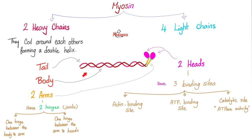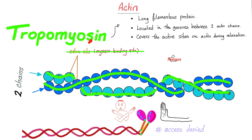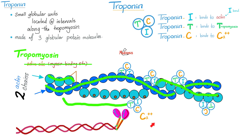Let's review myosin: two heavy chains, four light chains. The two heads have a binding site for actin, an ATP binding site, and catalytic ATPase activity to release energy for contraction. Actin (thin filaments) is covered by tropomyosin. To remove this guard, calcium must come out of the two doors, bind troponin C, which unlocks and removes tropomyosin. Now actin is exposed, myosin binds actin by extending cross bridges, pulling actin closer to the midline — contraction.